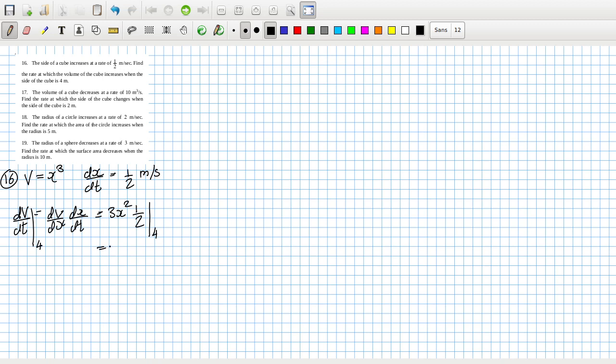Yeah, so that's 4 squared, which is 16, divided by 2, which is 8, times 3, which is 24 metres cubed per second.